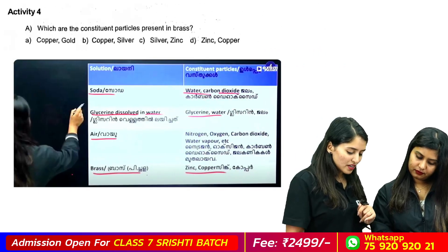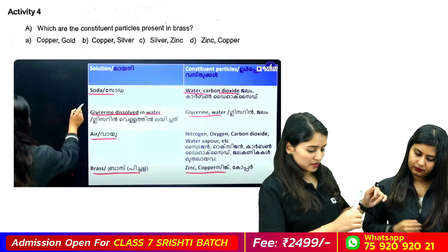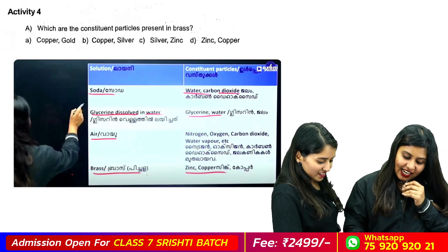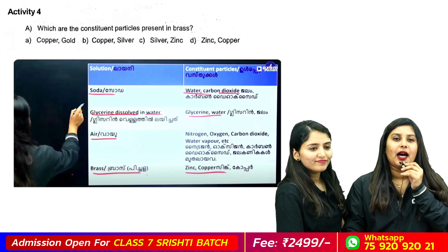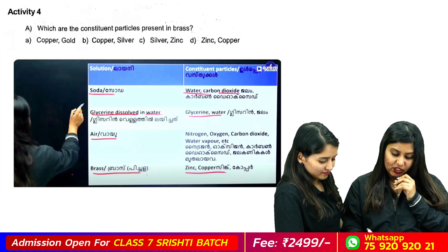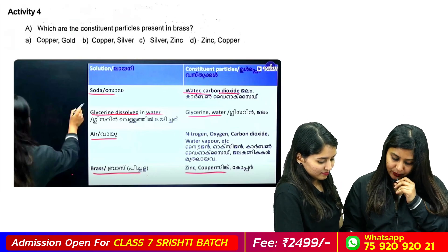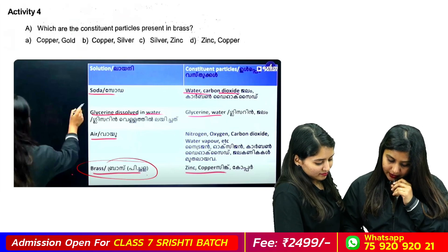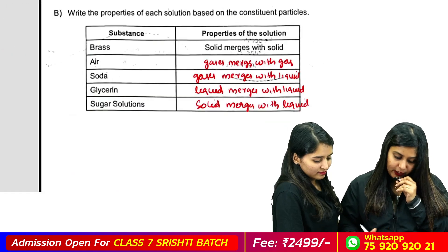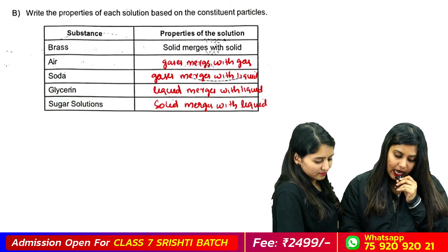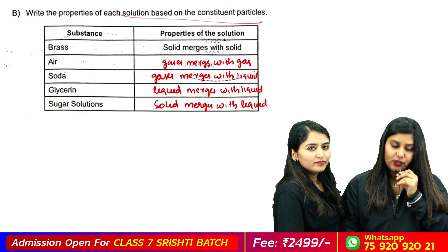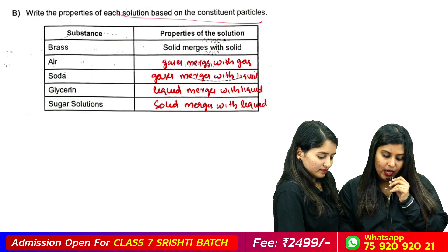You know what? Yes, Noka. Which are the constituent particles present in brass? We already discussed this. Zinc and copper. Now, which of the properties of each solution is based on the constituent particles?